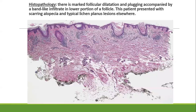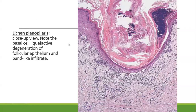Histology of lichen planopilaris shows significant follicular plugging with dilated follicles. The interface change involves only the follicles, with a band-like lymphohistiocytic infiltrate involving the hair follicles. On higher magnification, interface change and basal cell degeneration at the follicular epithelium are visible.